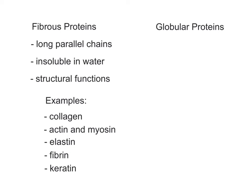Additional fibrous proteins include elastin, which allows blood vessels and skin to stretch and return to their original shape; fibrin, used in blood clotting; and keratin, which waterproofs the skin and forms the structure of hair and nails.